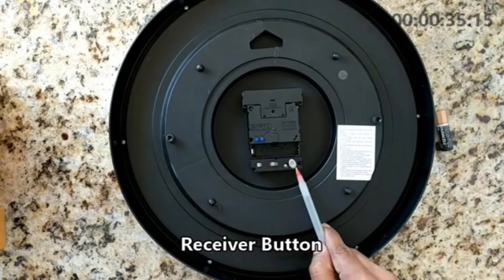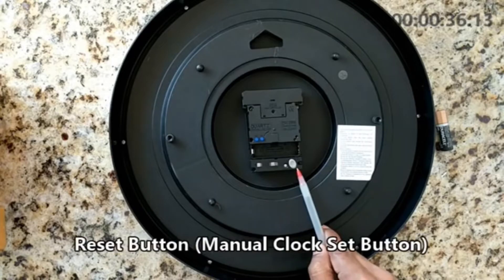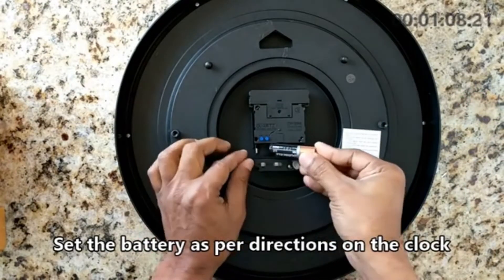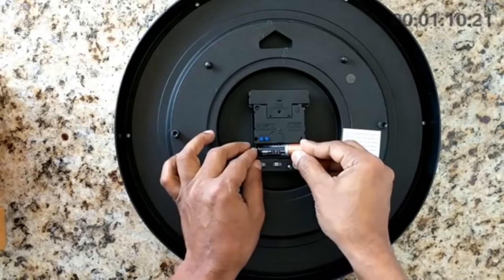Then, here is the reset button. This button is used to set your clock manually. We will talk about it later. When you choose batteries, use alkaline batteries and never select previously used batteries.